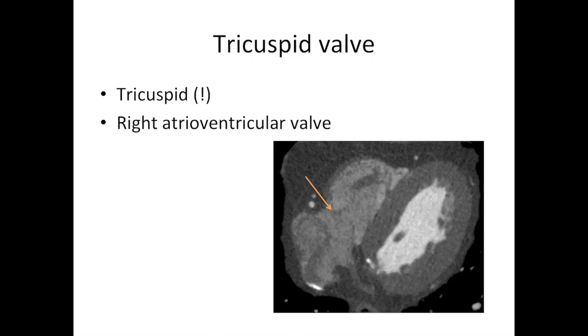Let's start with the tricuspid valve. This is between the right atrium and ventricle. It's aptly named because it has three cusps, and you can see it here with the orange arrow and the blue lines on this CT scan.